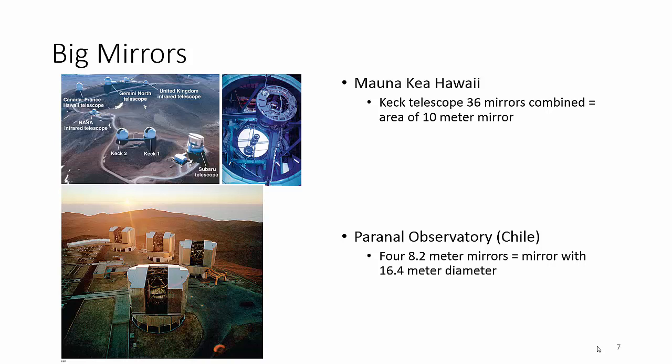The mirror in Hawaii, the ones you've already seen the picture of, 36 mirrors together make a 10 meter mirror. The one in Chile, 16.4 meters. So, big mirrors. Also, look at the pictures. Where are they located? Looks like they're all located on a mountain.